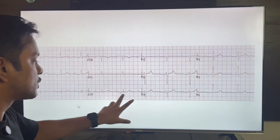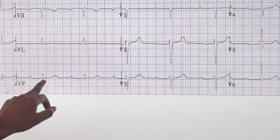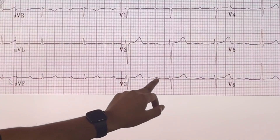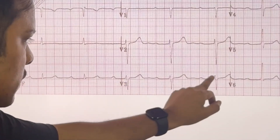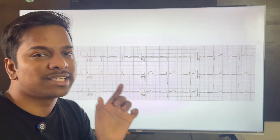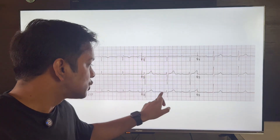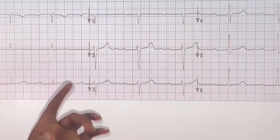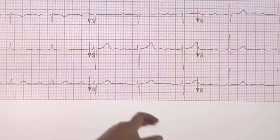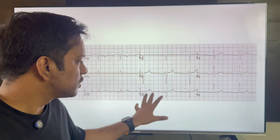In the next ECG, let's check if it's sinus rhythm. We can see P waves followed by QRS complexes consistently throughout. This is typically a first degree heart block — there is a huge distance between P and QRS. Normally the PR interval is 0.1 to 0.2 seconds, but here there are more than five small boxes — about six — so this is first degree heart block, which can be managed conservatively.